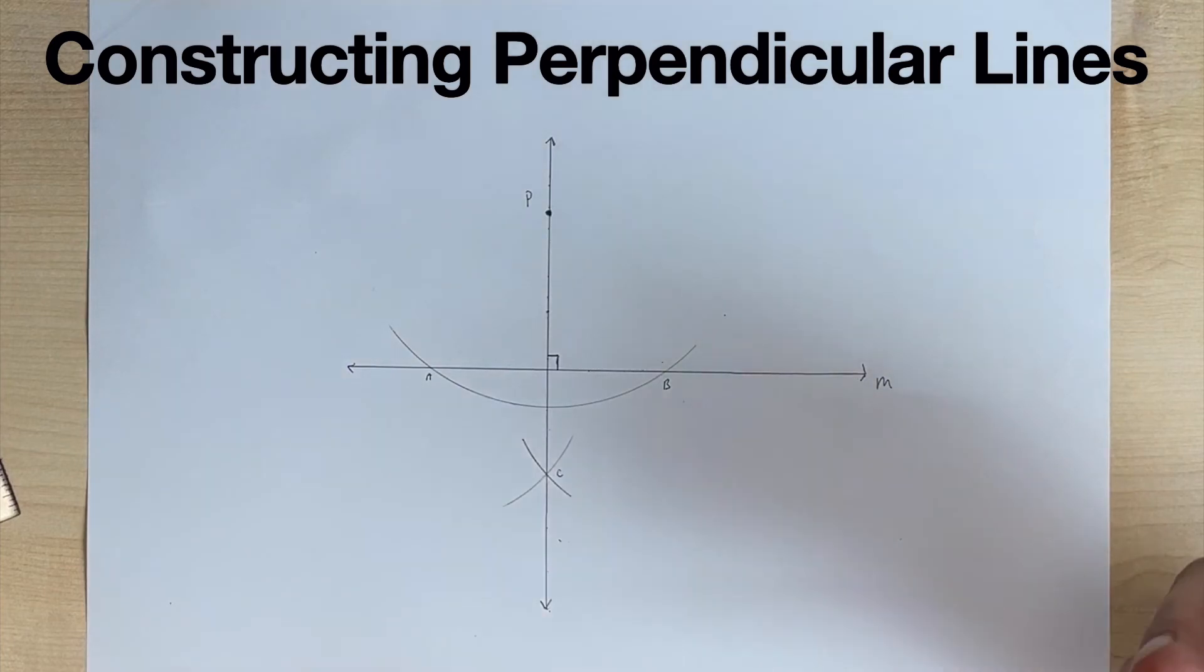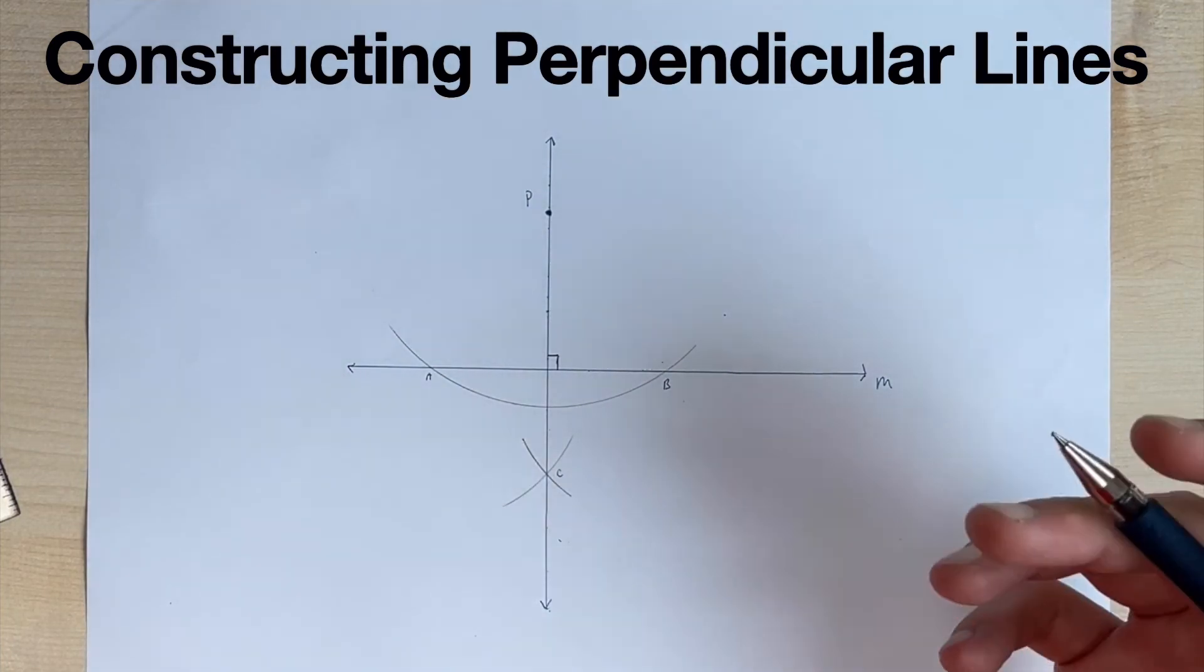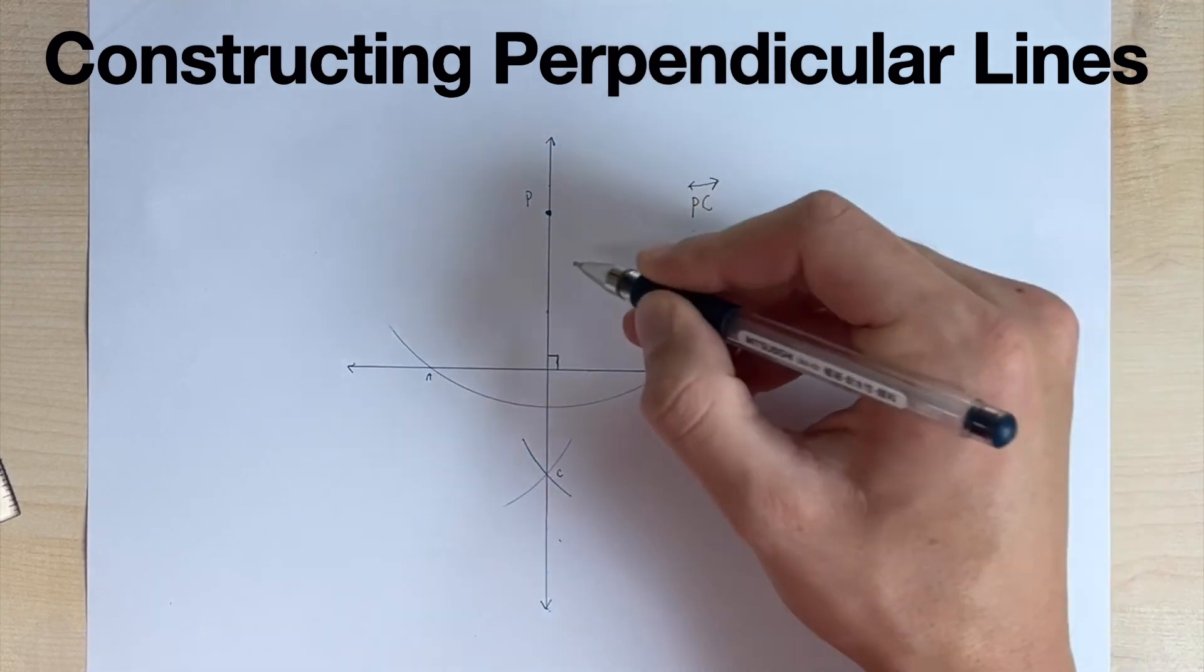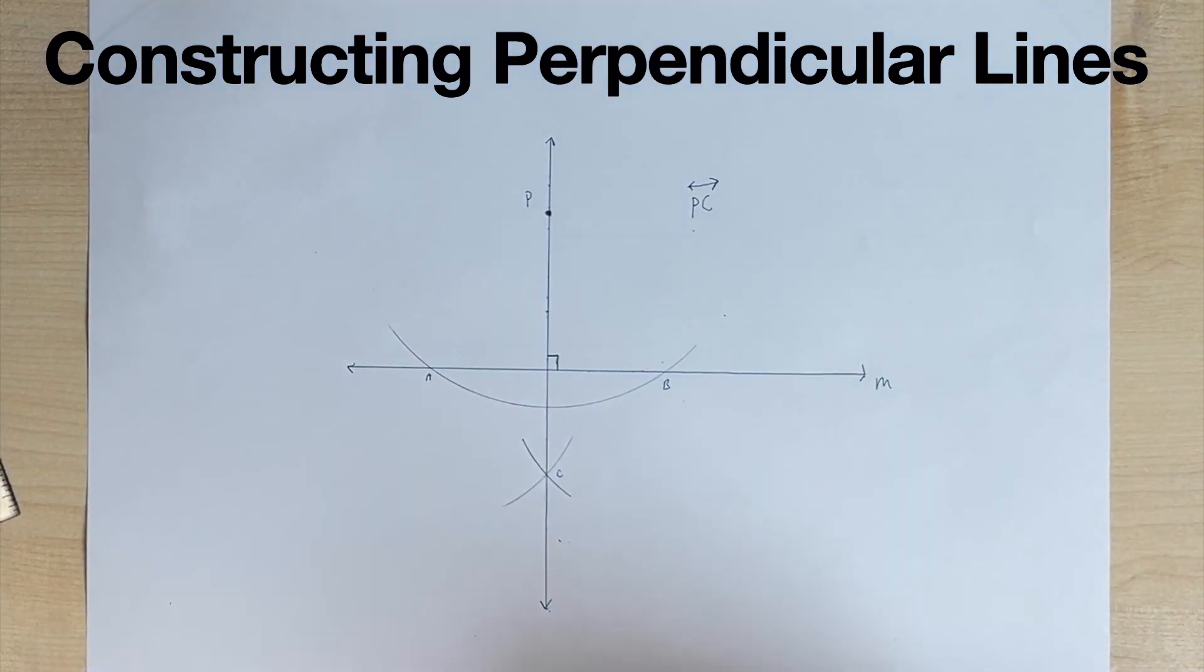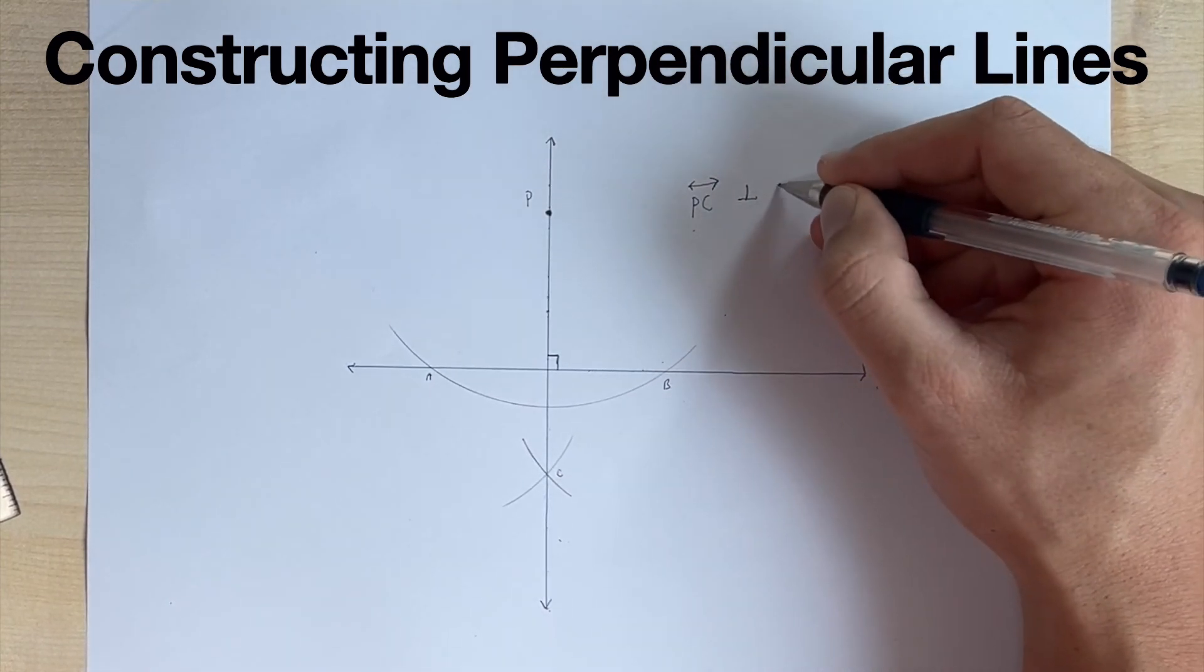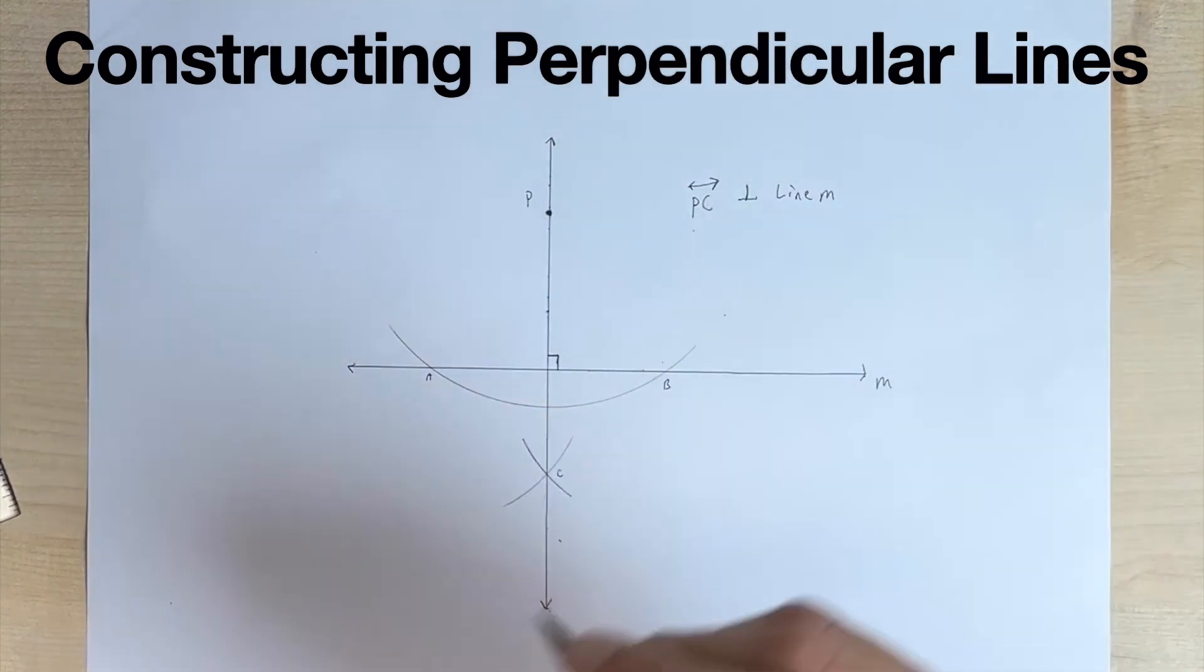And we have constructed perpendicular lines. So we could say that line, we call this line PC, right? That would be our vertical line PC. And we could say it is perpendicular to line M. And that's how you construct perpendicular lines.